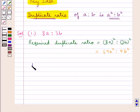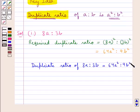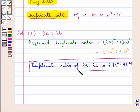Thus, we say, duplicate ratio of 8a is to 3b is equal to 64a square is to 9b square. So, this is the final answer for the first part of the question.